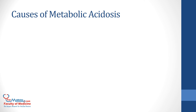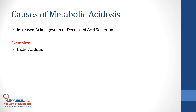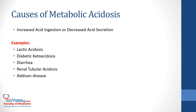What are the causes of metabolic acidosis? It's basically increased acid ingestion or decreased acid secretion. Some examples are lactic acidosis, diabetic ketoacidosis, diarrhea, renal tubular acidosis, Addison's disease, uremia, and drugs such as acetazolamide, spironolactone, and iron.